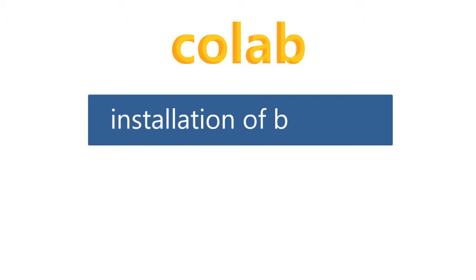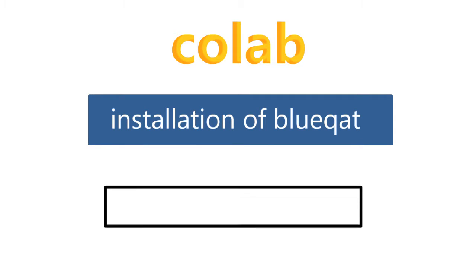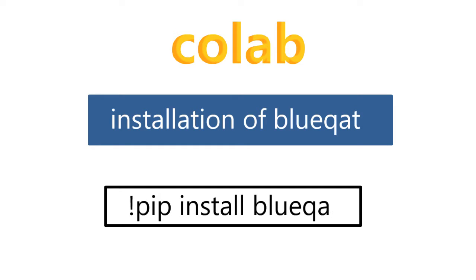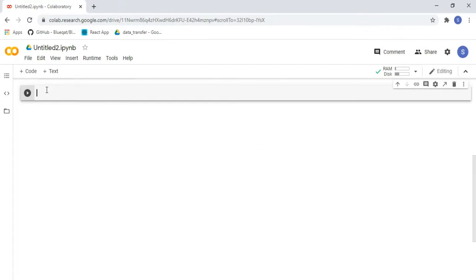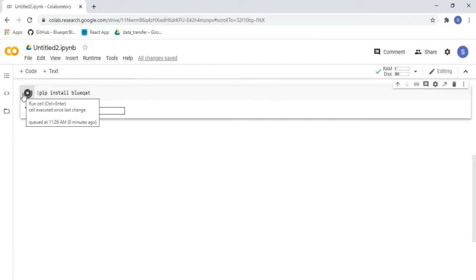Like we did in previous video, we will start with installation of BlueCat. We can do it by using this code: exclamation mark pip install BlueCat. Type the code that was shown earlier in Google Colab, then click on the play button and BlueCat will be installed.